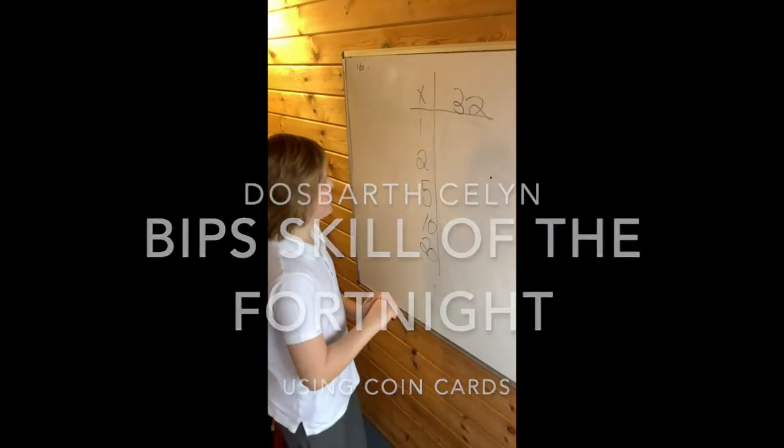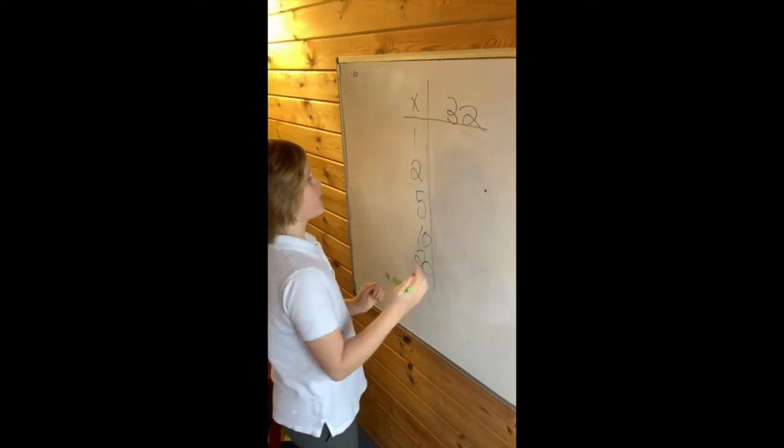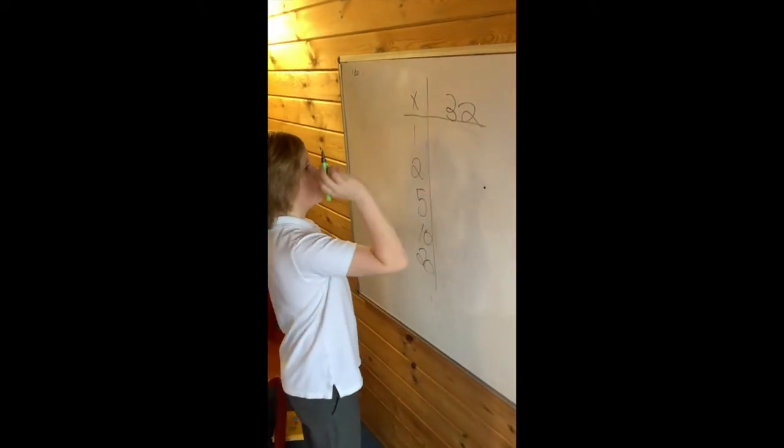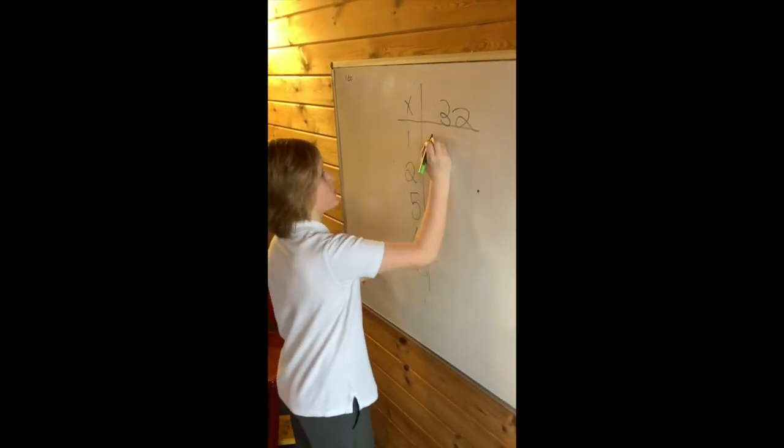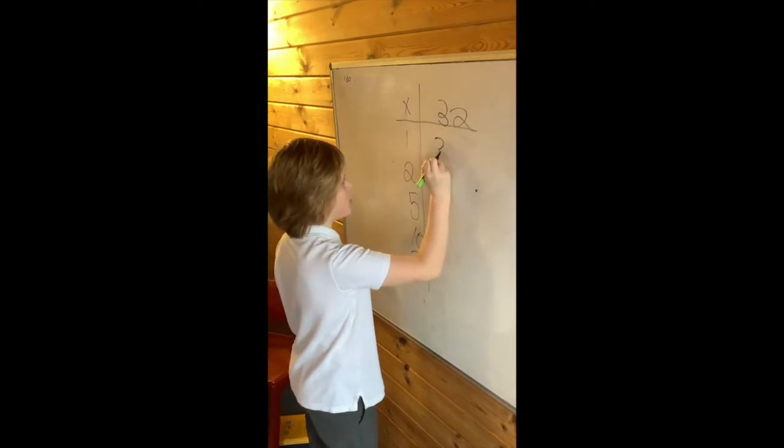Today I'd like to show you how to use a coin cut. The first thing we're going to do is multiply 1 by 32. That's a simple one, 32.